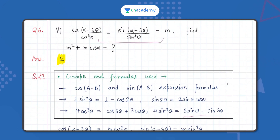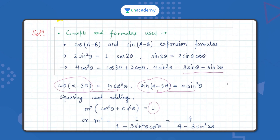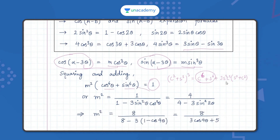As the very first step, we cross-multiply: cos(α - 3θ) = m·cos³θ and sin(α - 3θ) = m·sin³θ. Now squaring and adding: cos²(α-3θ) + sin²(α-3θ) = 1, so we get 1 = m²·(cos⁶θ + sin⁶θ). Using the identity (sin²θ + cos²θ)³ = 1, we get cos⁶θ + sin⁶θ = 1 - 3sin²θ·cos²θ, so m² = 1 / (1 - 3sin²θ·cos²θ).